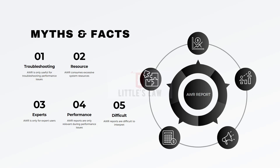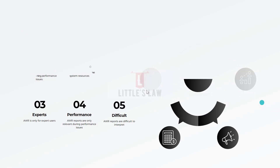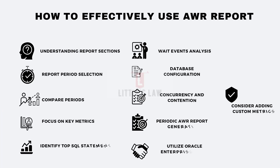If you come across any other myths, please comment in the comment section. Now let's move to how to effectively use AWR reports. The first part is understanding the report sections. The AWR report is divided into various sections including instance details, time model statistics, top SQL statements, wait events, and more. Understanding each section is crucial for pinpointing performance bottlenecks. For example, the top SQL statement section highlights the most resource-intensive SQL queries.